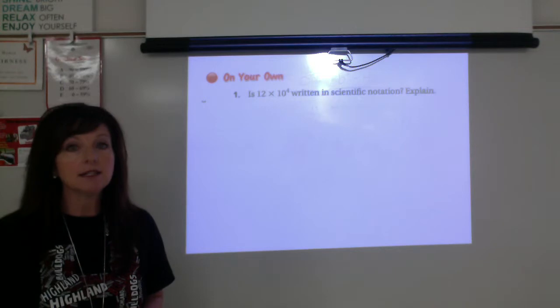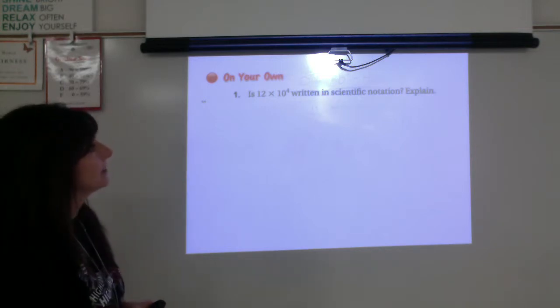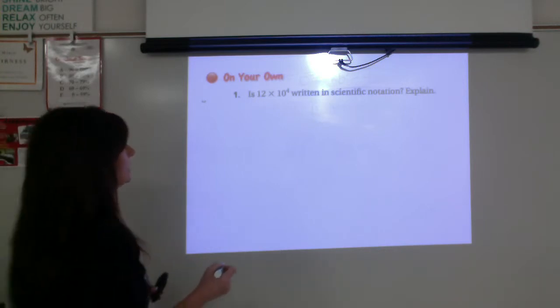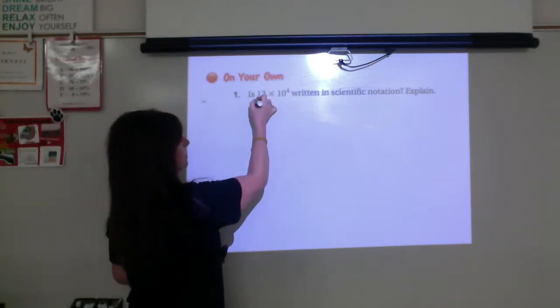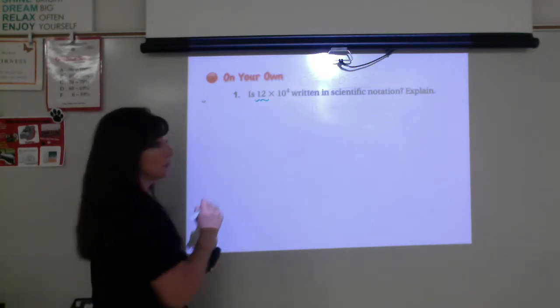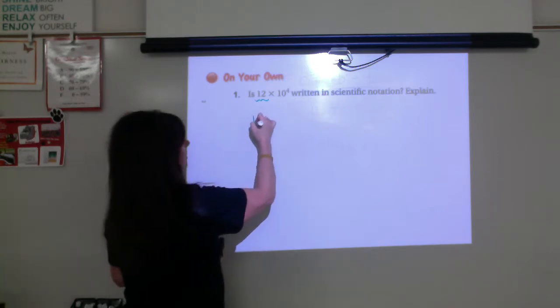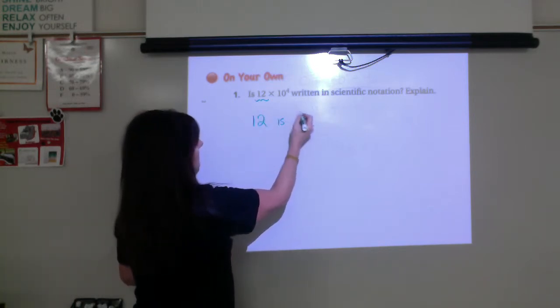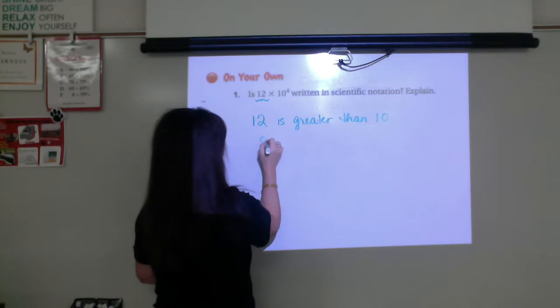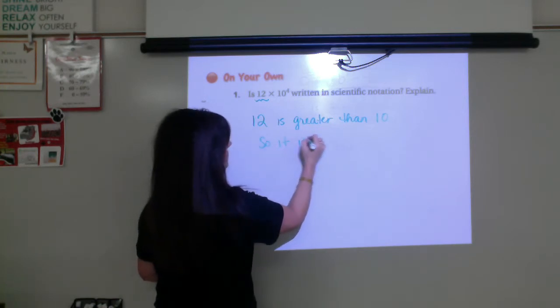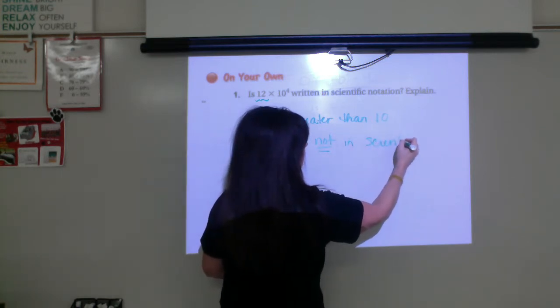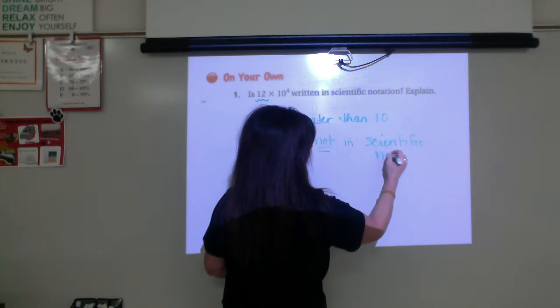On your own, first example. Is 12 times 10 to the 4th written in scientific notation and explain? So we look at the two parts. The decimal number right here, 12. It has to be greater than 1 but less than 10. Since 12 is greater than 10, it is not in scientific notation.